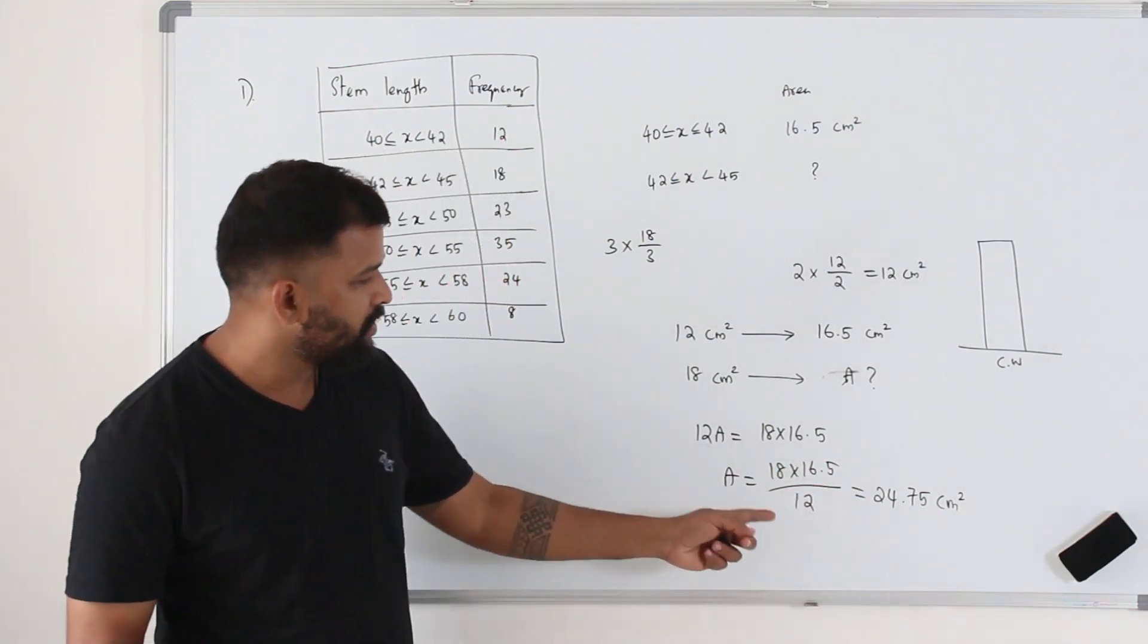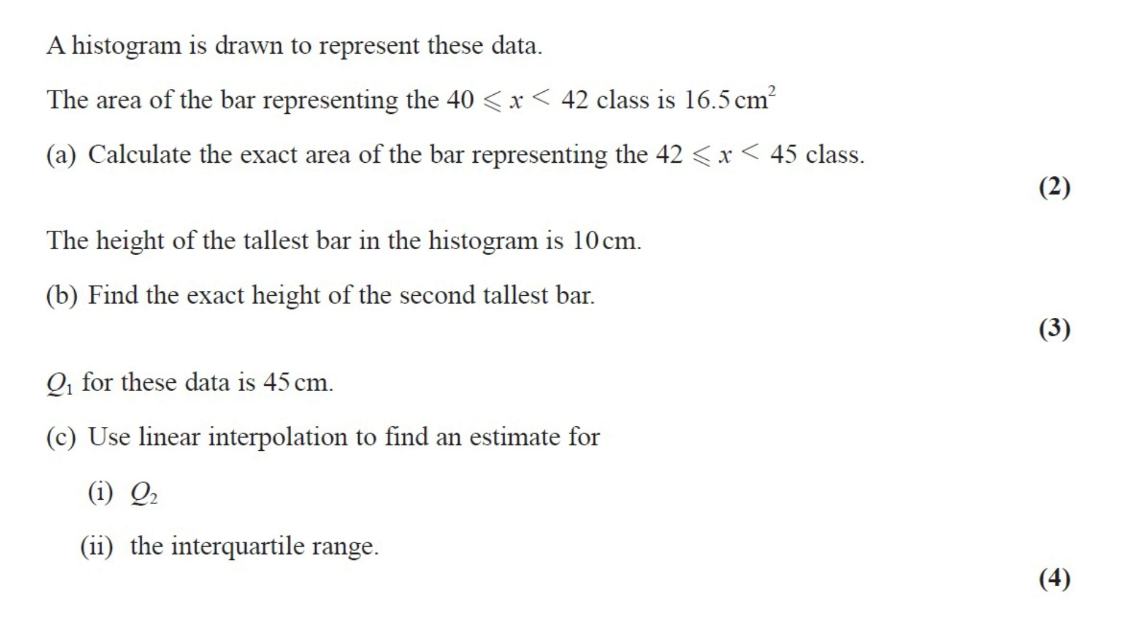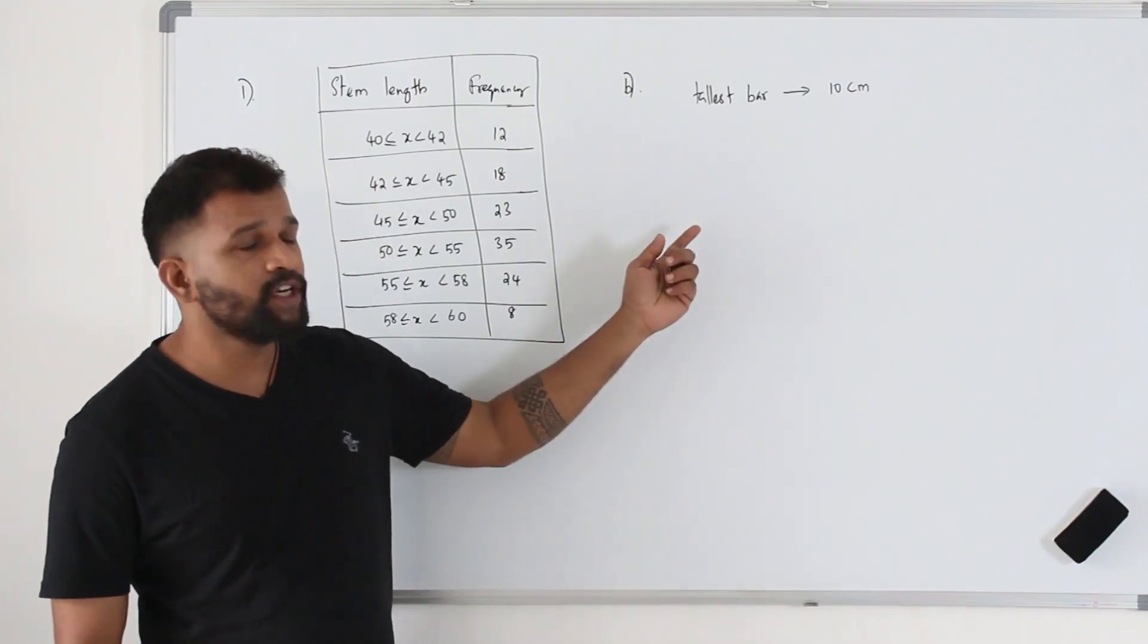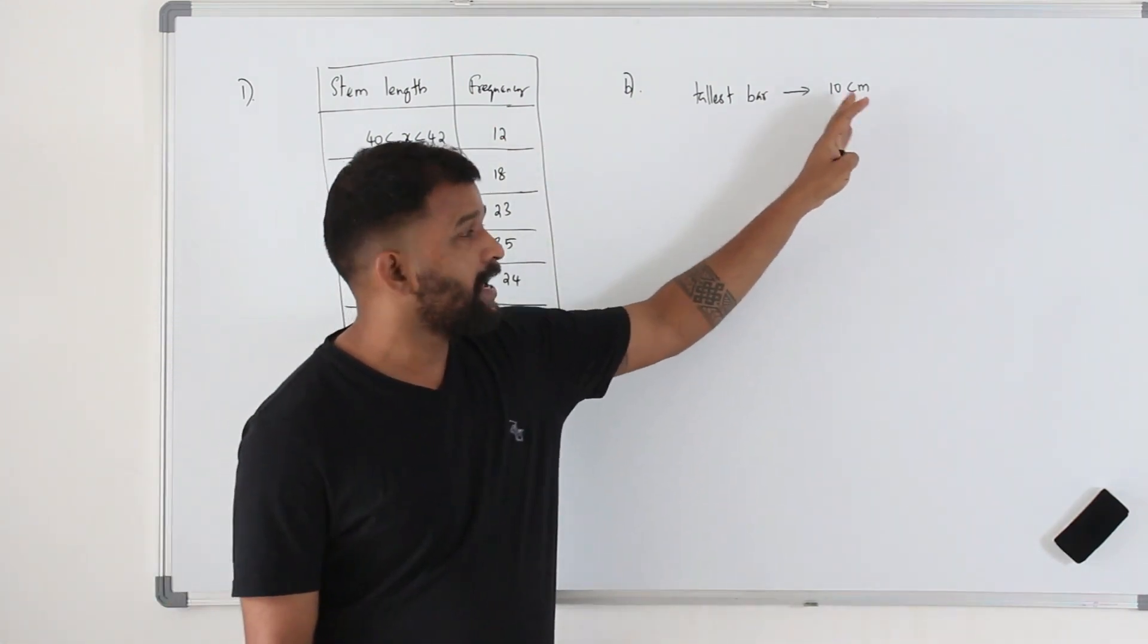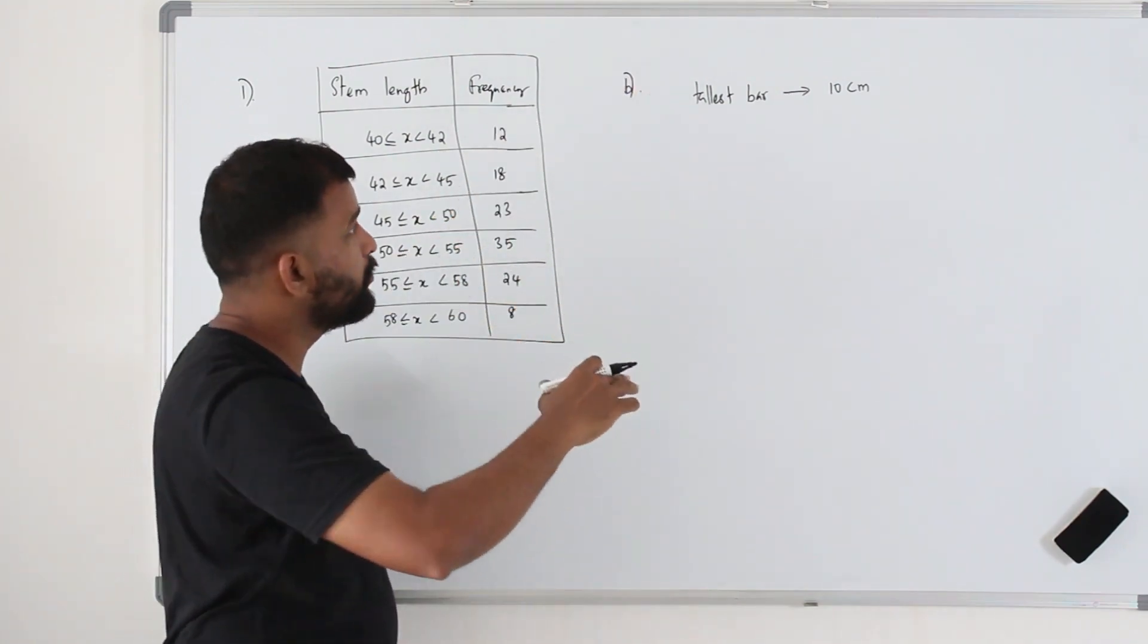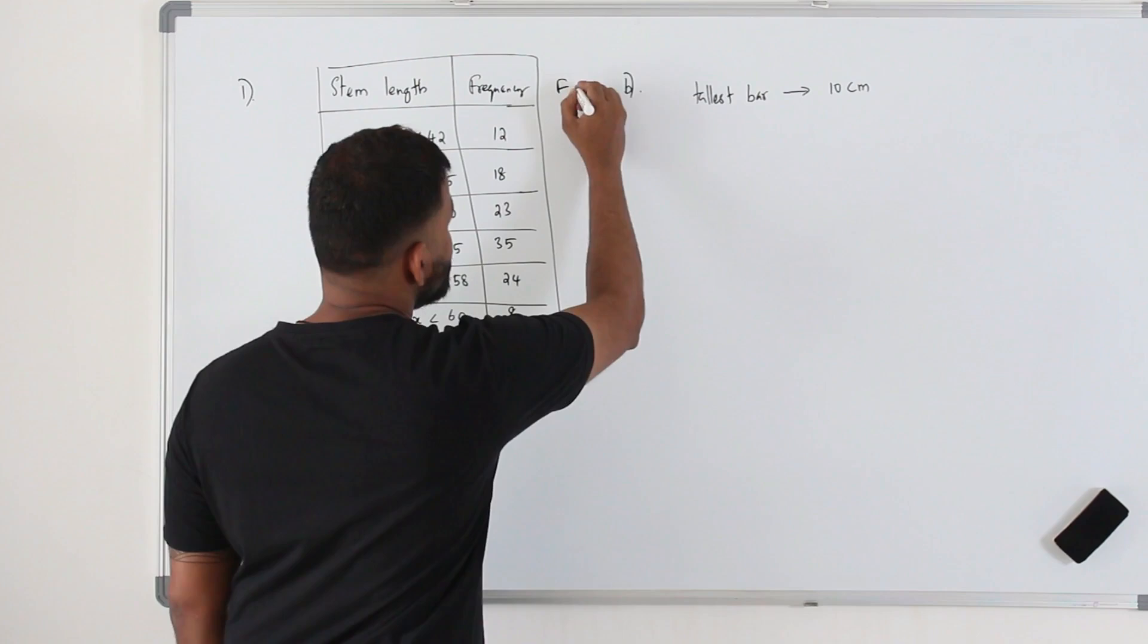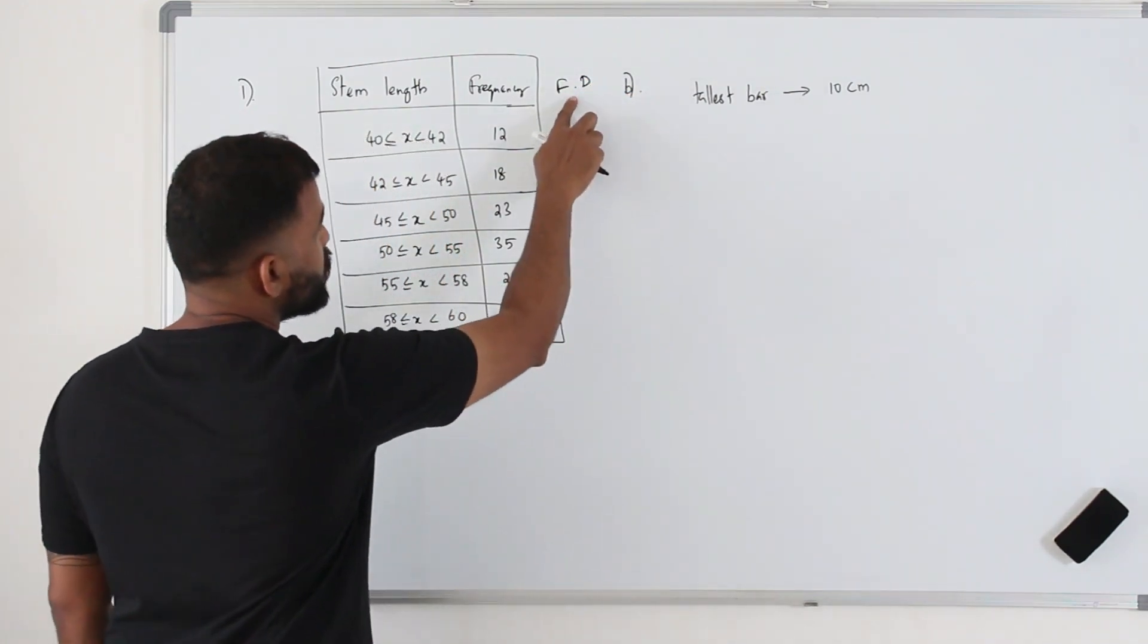The height of the tallest bar in the histogram is 10 centimeters. Part B: find the exact height of the second tallest bar. This question got three marks. The height of the tallest bar is 10 centimeters. If you draw a histogram using this data, the height will be the frequency density. How do we find the frequency density? Frequency divided by the class width.